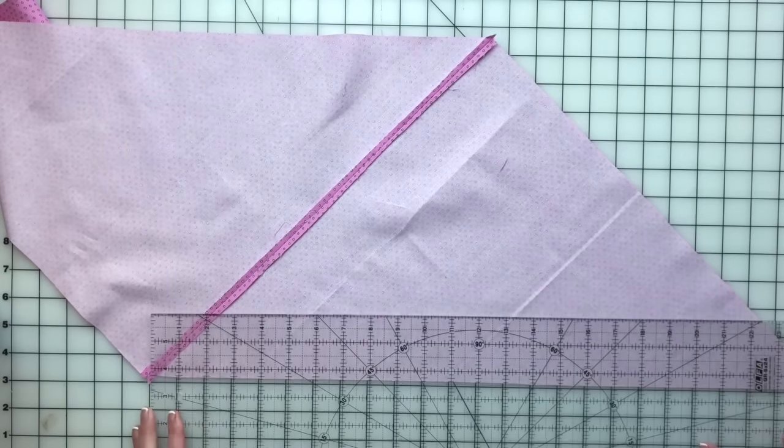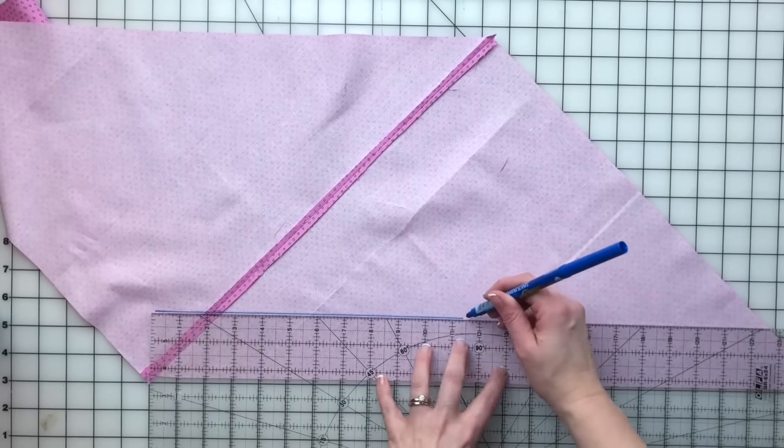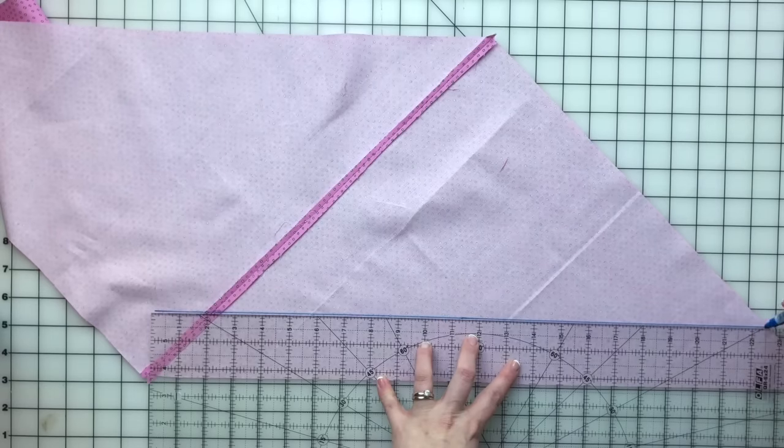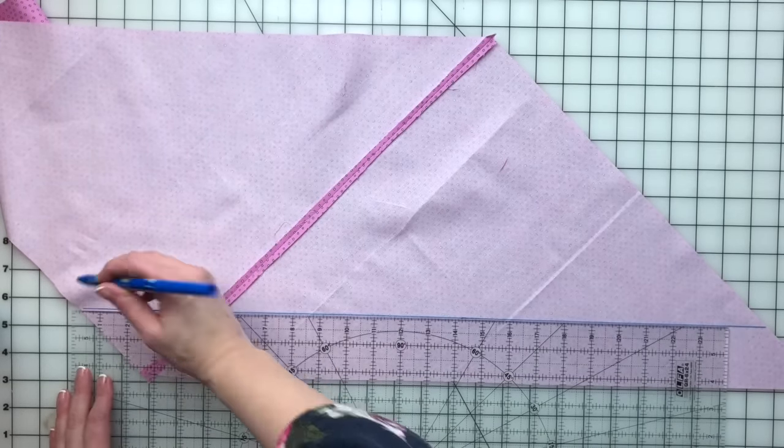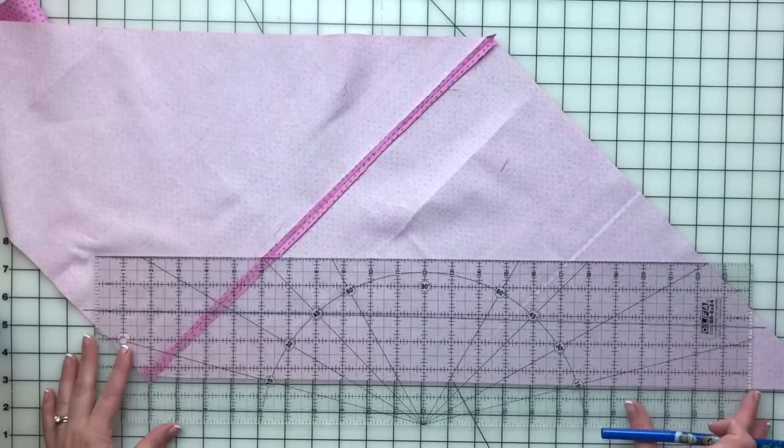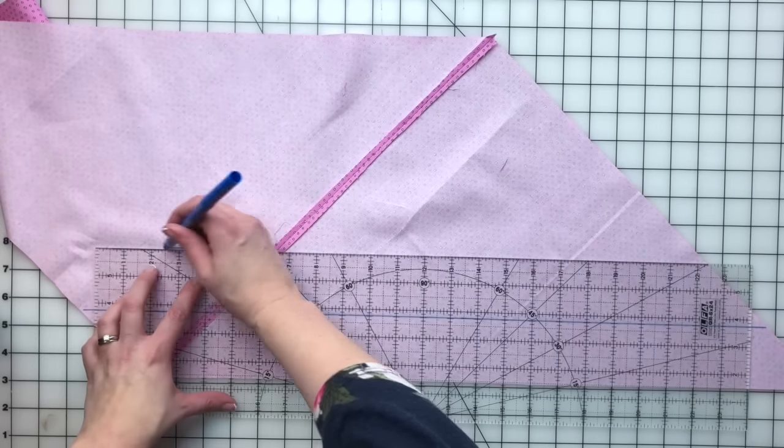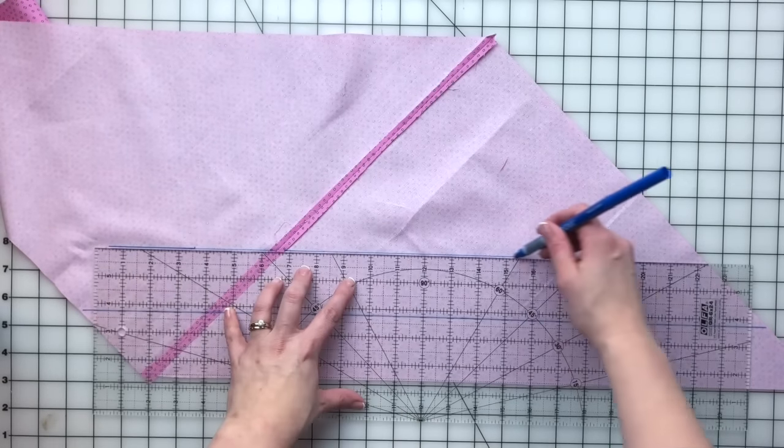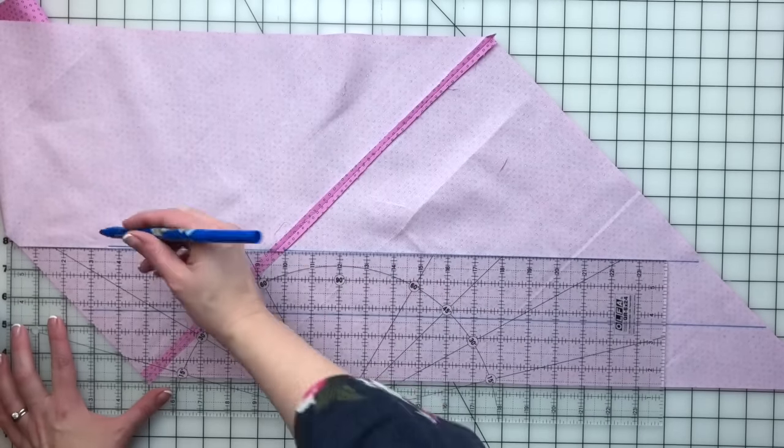Now use a marker or pencil to mark the width of your desired bias trim. I'm just using one of my kids markers here because this line is going to be in the seam allowance. This is a cutting line. So use any marker or pen that you wish, just be careful that it doesn't soak through and damage your cutting mat.